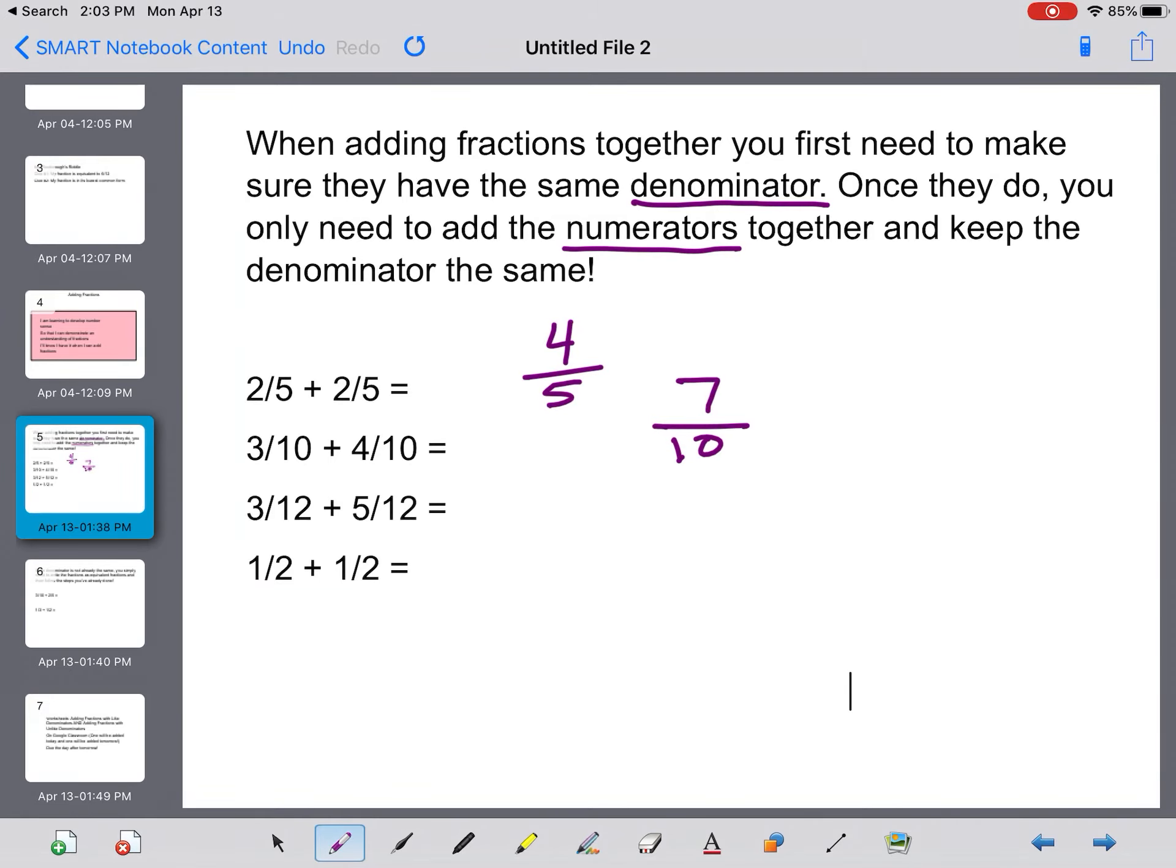Next we've got 3 over 12 plus 5 over 12. So my denominator will be 12.